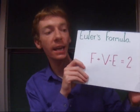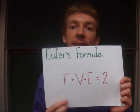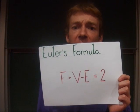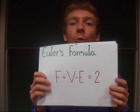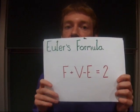It's called Euler's formula. It was discovered by the Swiss mathematician Leonard Euler, and it looks like this. It says that the number of faces plus the number of vertices, that's the number of corners, take away the number of edges, will always equal two. This is for a normal solid, with no holes in it, or anything like that.